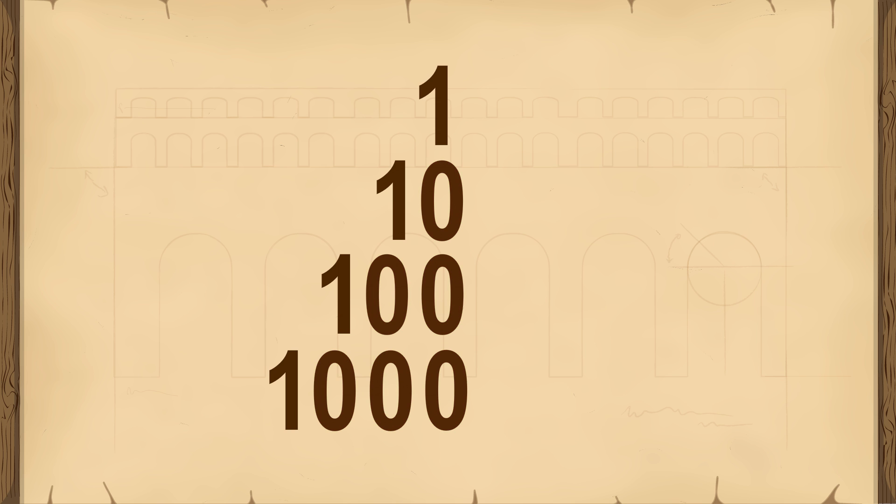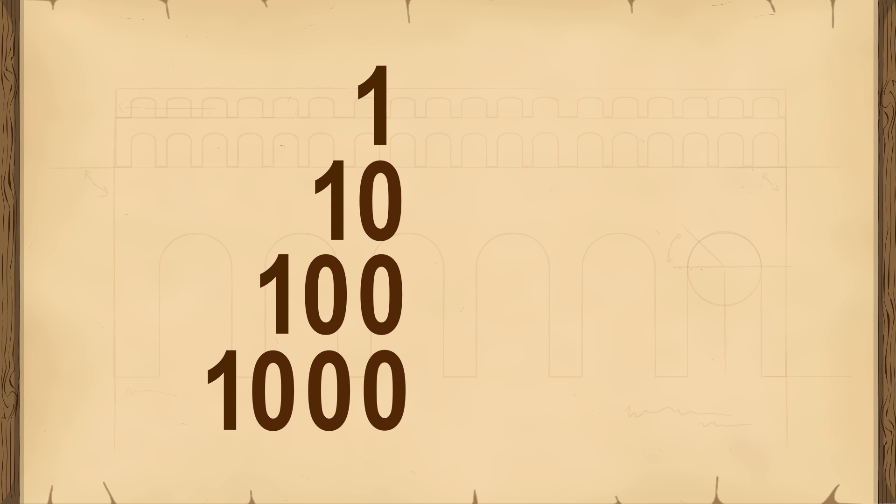The Roman number system is an example of sign value notation. Sign value notations do not require a symbol for 0 since different quantities such as 1, 10, 100, and 1000 each have unique symbols whose value does not depend on their position in the number.